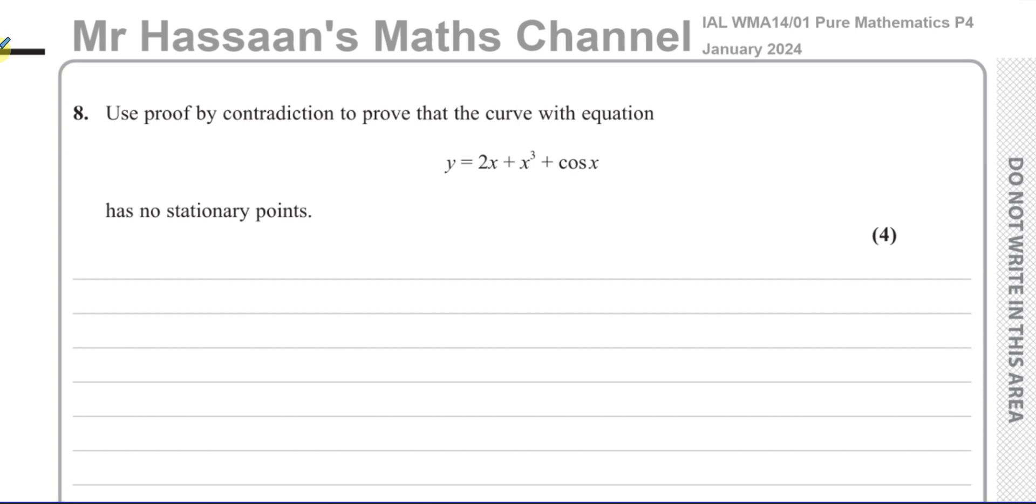So in this question here, it says use proof by contradiction. So you can't do this like in P2, in a P2 type of way. You have to do this by contradiction. You have to first assume the opposite to prove that the curve with the equation y equals 2x plus x cubed plus cosine x has no stationary points. Now we have to prove that this has no stationary points.